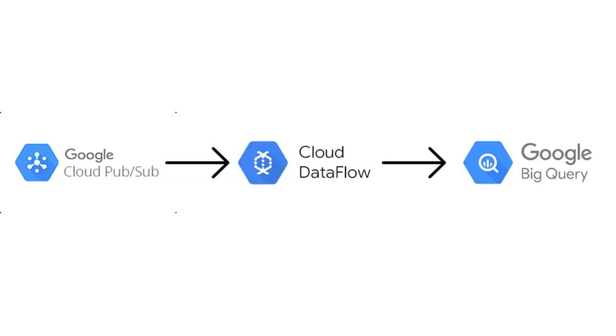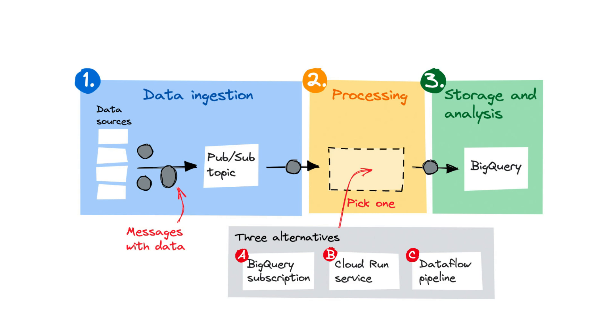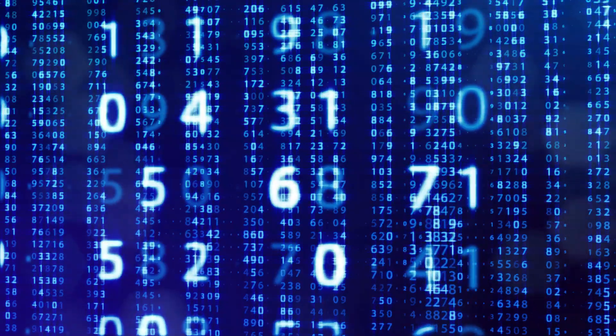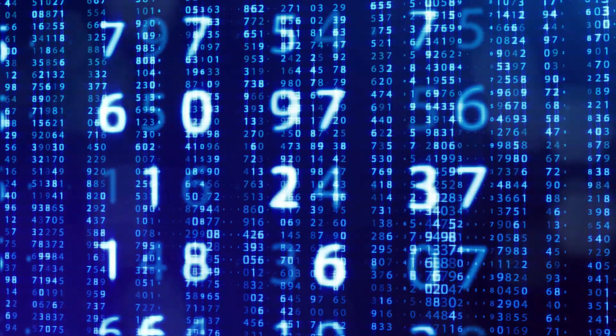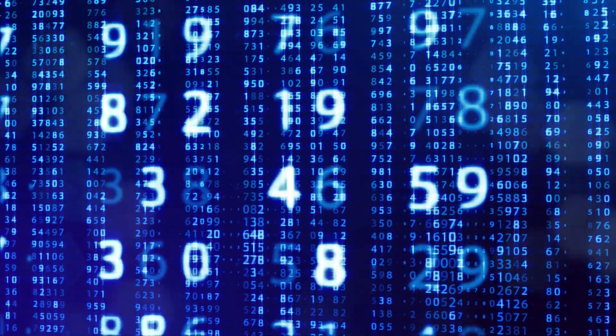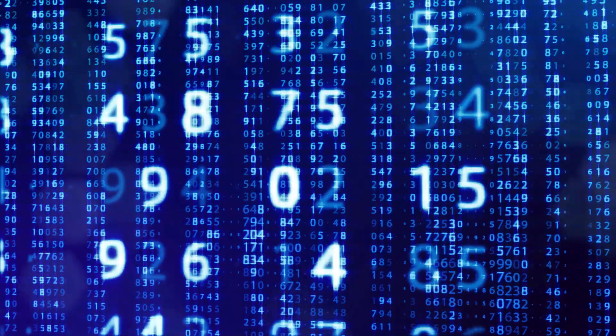The next skill is big data and streaming. You will handle real-time data, for example live transaction feeds or sensor data. Understanding Kafka, Pub/Sub, or Dataflow streaming will help you stand out. Finally, data security and governance — you have to manage permissions, encryption, and ensure compliance. Companies trust you with their most sensitive data, so this part is very serious.